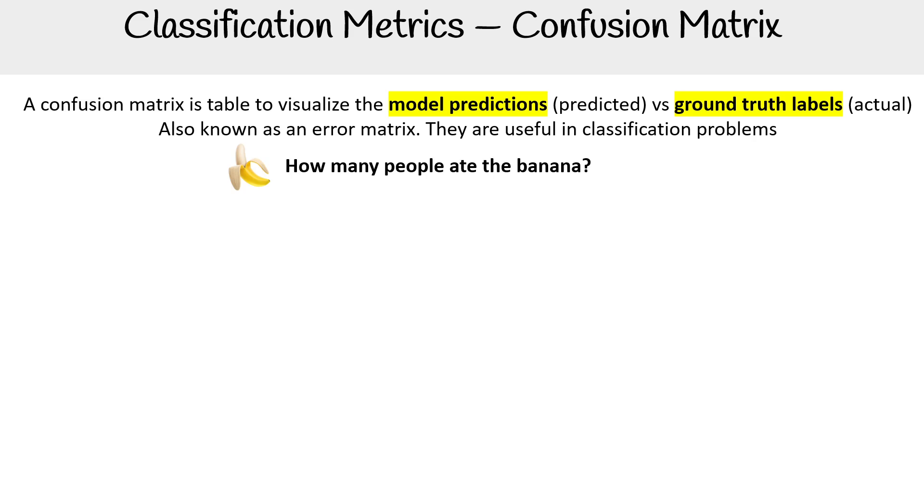So imagine we want to figure out how many people ate the banana. We have a yes and a no. We have a data set where we've labeled yes, this person ate the banana, or no, this person has not eaten the banana. Then we run the prediction through a model for that person and we have that data set. Now we're comparing them.